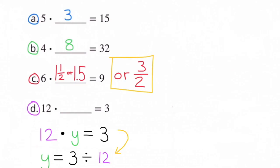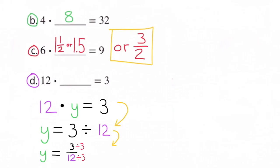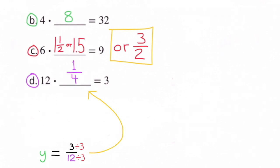We can solve for y by getting the y by itself. y equals 3 divided by 12, and 3 divided by 12 is the same as 3/12. 3/12 can be simplified: 3 divided by 3 is 1, and 12 divided by 3 is 4, so y would equal 1/4. 12 times 1/4 equals 3, and that's really the same as one-fourth of 12 is 3.